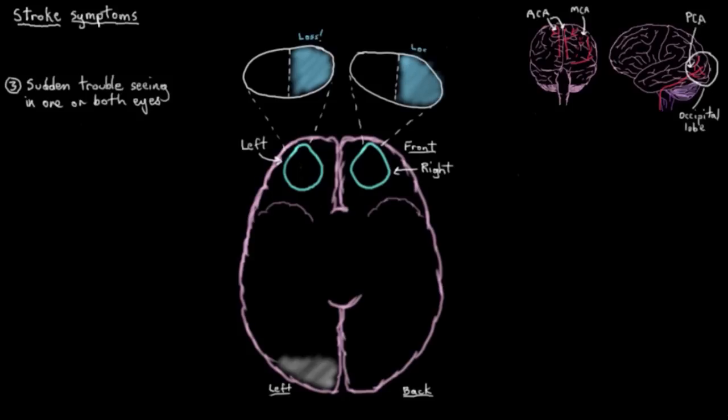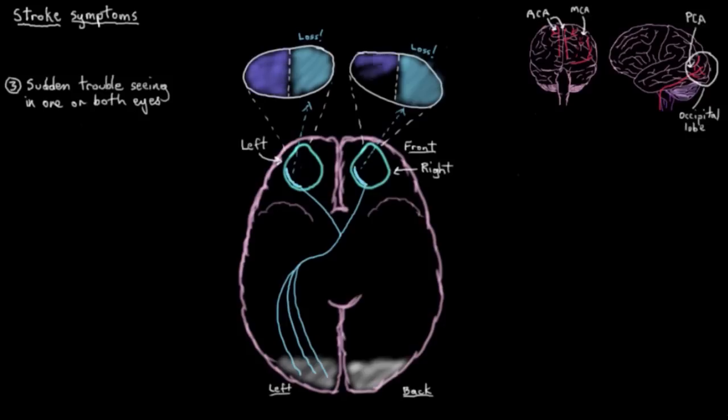And that just has to do with the way your neurons are connected up from your eyes to your occipital lobe. And then similarly if you have a stroke affecting your right side of your occipital lobe then you'd lose vision in both your left visual fields. Very interesting.